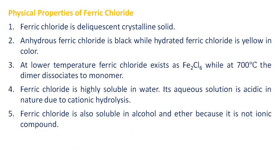Physical properties of ferric chloride: Ferric chloride is a deliquescent crystalline solid. Anhydrous ferric chloride is black while hydrated ferric chloride is yellow in color. At lower temperature, ferric chloride exists as Fe2Cl6, while at 700 degrees Celsius the dimer dissociates to monomer. Ferric chloride is highly soluble in water, and its aqueous solution is acidic in nature due to cationic hydrolysis. Ferric chloride is also soluble in alcohol and ether because it is not an ionic compound.